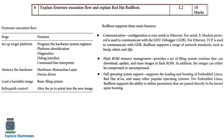The next question is: explain firmware execution flow and explain RedBoot. The firmware execution flow is shown on the left side: set up the target platform, abstract the hardware, load the boot table image, and relinquish control. On the right side, RedBoot supports these features: communication, flash RAM memory management, and full operating system support. Please write the explanation, not only sticking to this brief answer.